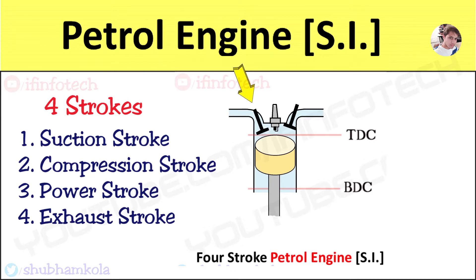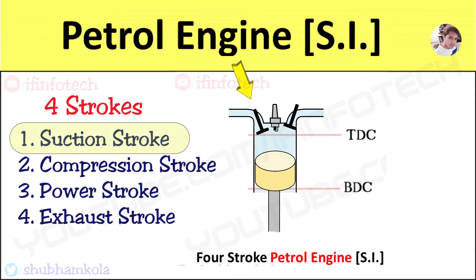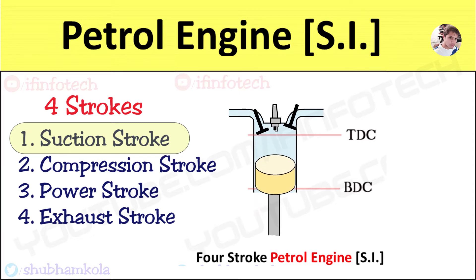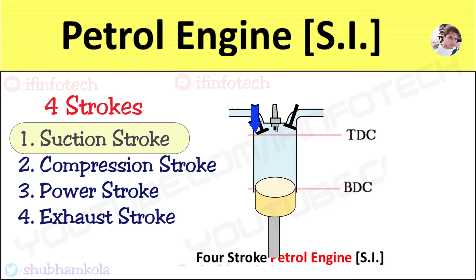The inlet valve opens 20 degrees before the TDC position of the piston. During the suction stroke, pressure inside the cylinder is atmospheric, but when the piston moves from TDC to BDC, volume increases, creating a pressure difference inside the engine cylinder. Due to this pressure difference, the petrol and air mixture enters the engine cylinder and fills it completely with charge. The inlet valve closes at an angle of 35 degrees after the BDC position of the piston.